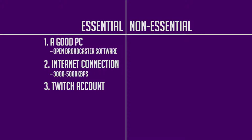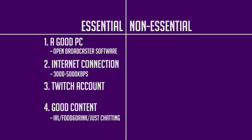Last but not least on the essentials list is some form of content. If you're going to be streaming, you don't just want to sit there and be boring — you want to be playing a game that's exciting to you or that you're really into. It can be a story game, a battle royale, whatever you want. Twitch has also expanded beyond gameplay: we now have the IRL category, food and drink for people cooking, and just chatting, which is more of a podcast format where you can take questions from viewers live.